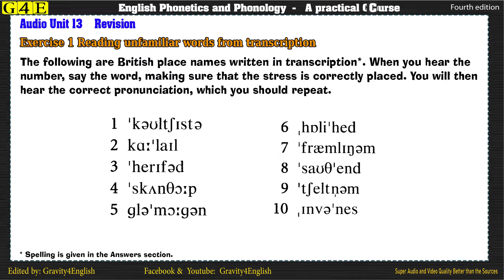Exercise 1: Reading Unfamiliar Words from Transcription. The following are British place names written in transcription. When you hear the number, say the word, making sure that the stress is correctly placed. You will then hear the correct pronunciation, which you should repeat.